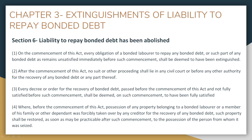Chapter 3 deals with the extinguishment of liability to repay bonded debt. Section 6 states that any liability of a bonded laborer to repay any bonded debt — even if it remains unsatisfied before the commencement of this Act — shall be extinguished. Any unpaid amount shall be deemed fully paid after this Act comes into force.